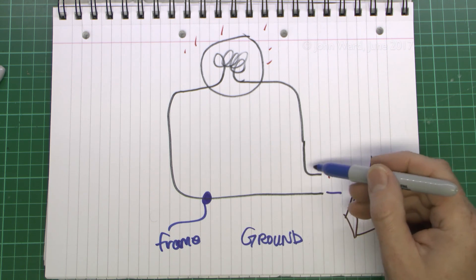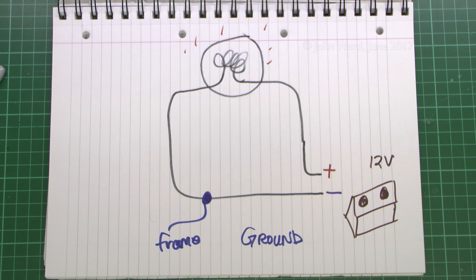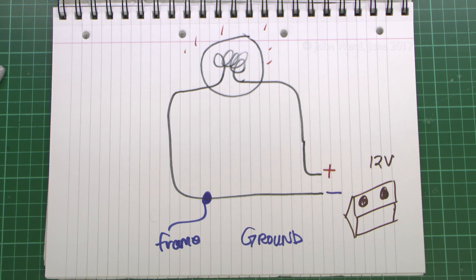And by calling this the ground, it's simply because we've decided that the negative in this case is going to be connected to the framework of the car. We could actually have just connected the positive to the framework of the car, it wouldn't make any difference, and in fact some cars were made like that a long time ago. But it doesn't really matter, it's just something we've chosen to do. In any event, the current still goes in the same direction, it doesn't actually make any difference.